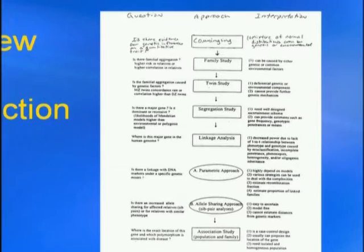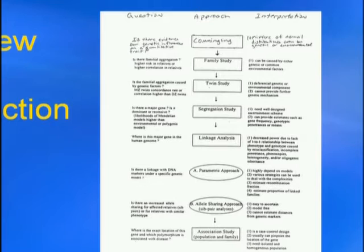Now that genotyping is cheap, fast, and easy to do, it is very tempting to jump right into a genetic association study. But keep in mind that before you do that, you need to make sure there is some evidence that your trait is genetically influenced. The first approach we'll use to address that question is something called commingling analysis or mixture analysis. This is a type of method where you would not write a grant to do commingling analysis alone, but it's one of the preliminary approaches you can take to determine whether or not your trait is genetically influenced.